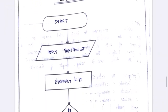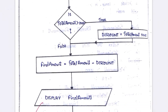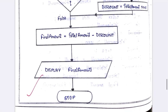Now let us convert the algorithm into a flowchart. Start, then input total amount, then set discount = 0. The condition is: is amount greater than 1000? If true, calculate discount = total amount × 0.08, then compute final amount = total amount minus discount, and display final amount. If false (less than 1000), go directly to the display step and display the final amount.